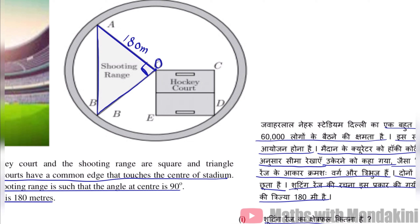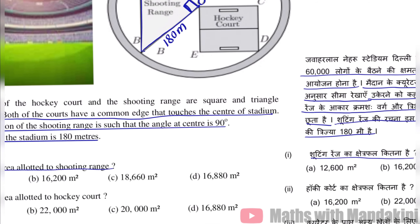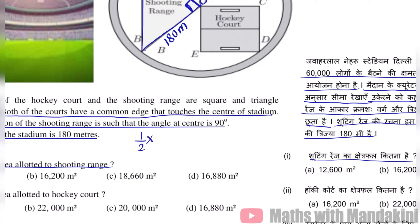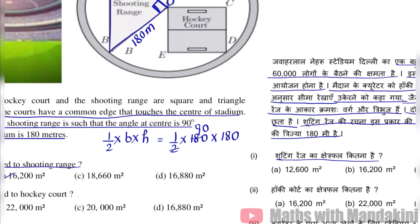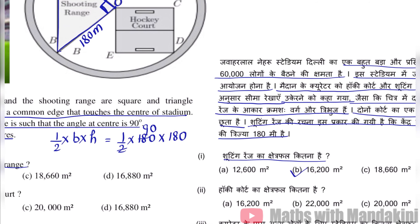Toh ab yaha par yeh humara trijja hai, radius 180 meter. Aur yeh bhi humara radius hai, OB jo hai woh bhi radius hai, yani yeh bhi humara 180 meters ho gaya. Aur kyunki yeh 90 degree ka angle hai, toh yeh ho gaya samkorn tribhuj. Aur samkorn tribhuj yani right angle triangle mein jab hume area nikalna hota hai, toh hum seedhe half into base into height use karte hain. Yani ek bata dho guna aadhar guna uchai. Aur yaha par aadhar bhi humari trijja hai, 180. Aur uchai jo hai woh bhi humara radius yani 180. Toh in dono ko guna karke hume milega 16,200 meter square. Yani 16,200 meter square jo hai woh humara shooting range ka shetrifal aa gaya.